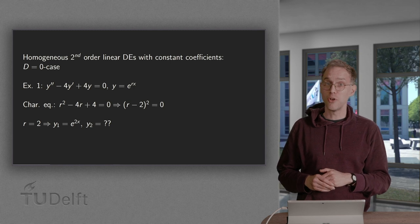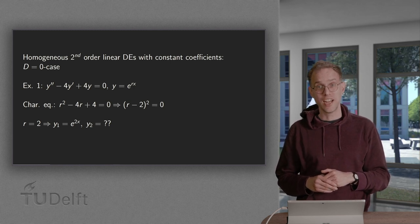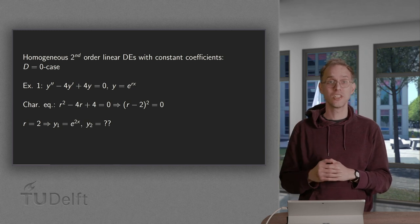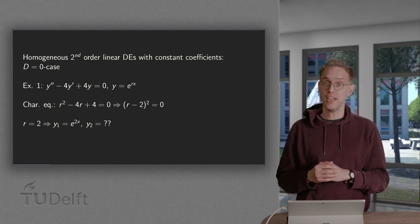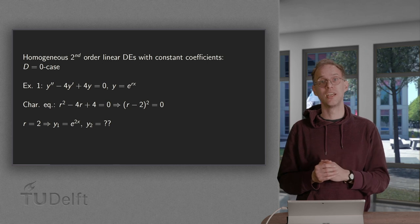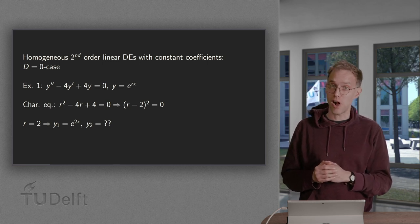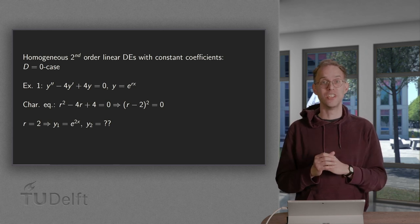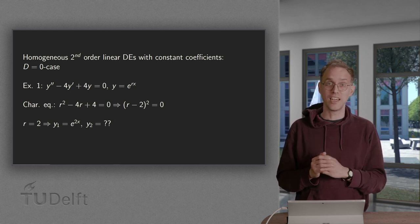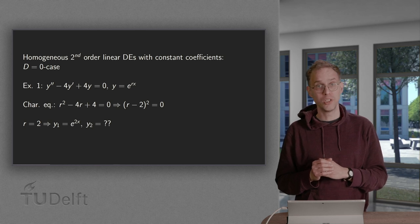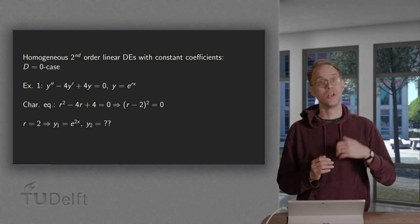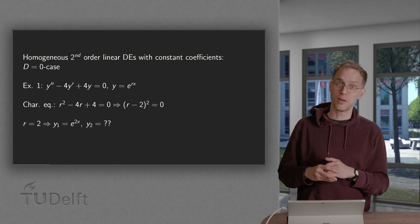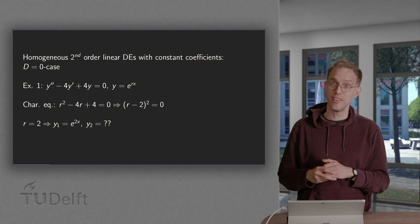We can try to solve a homogeneous second order linear differential equation with the ansatz y(x) = e^(rx). This yields the characteristic equation for r. But what happens if the discriminant D equals zero? In that case we have only one solution, and we need two independent solutions. You will learn how to deal with this case in this video.